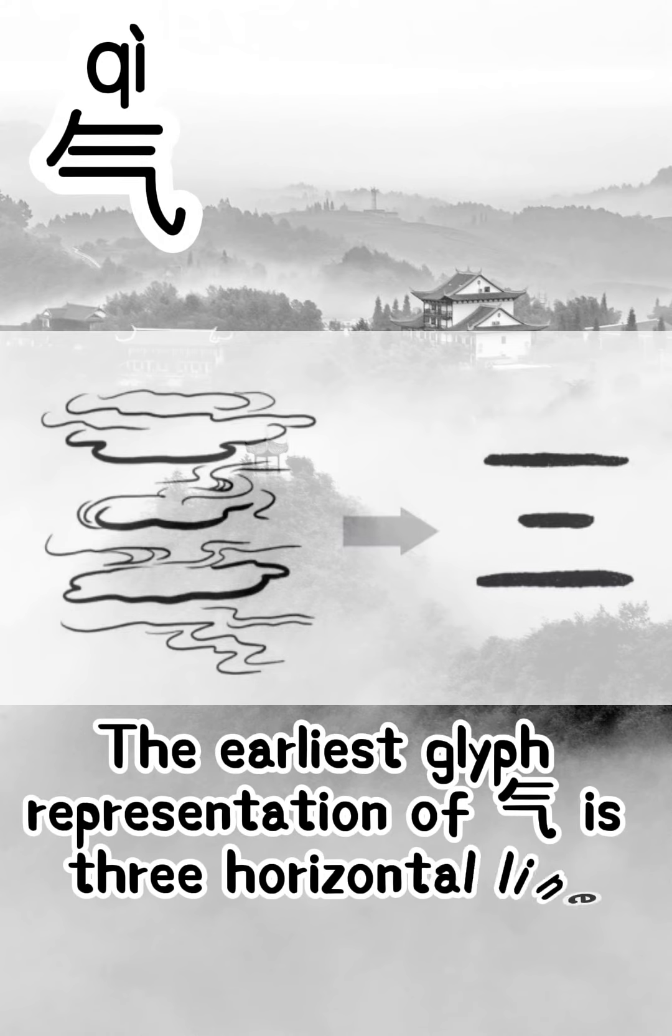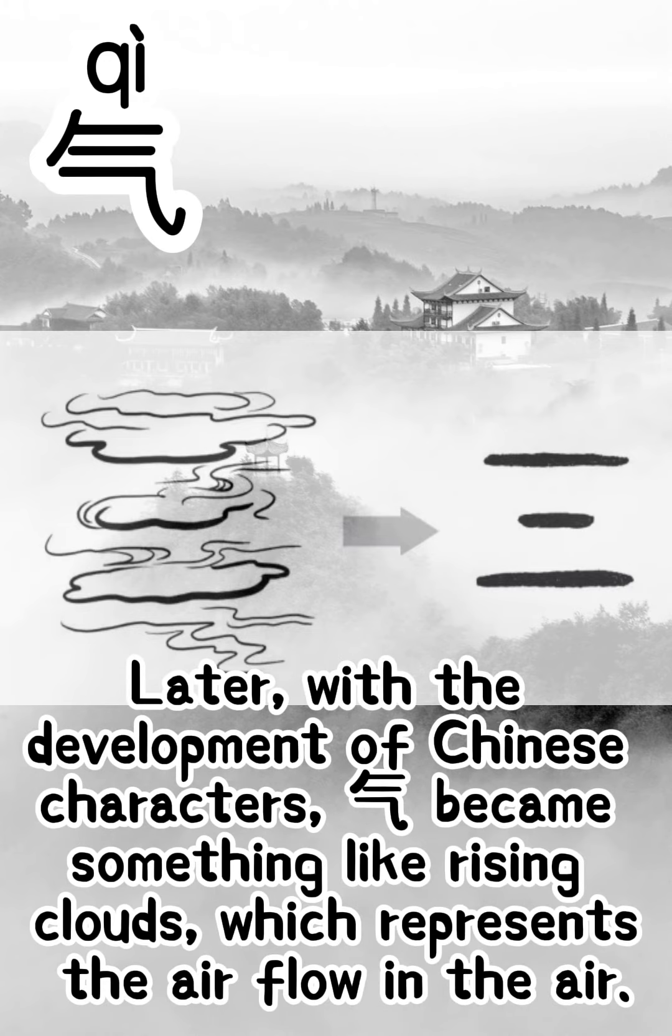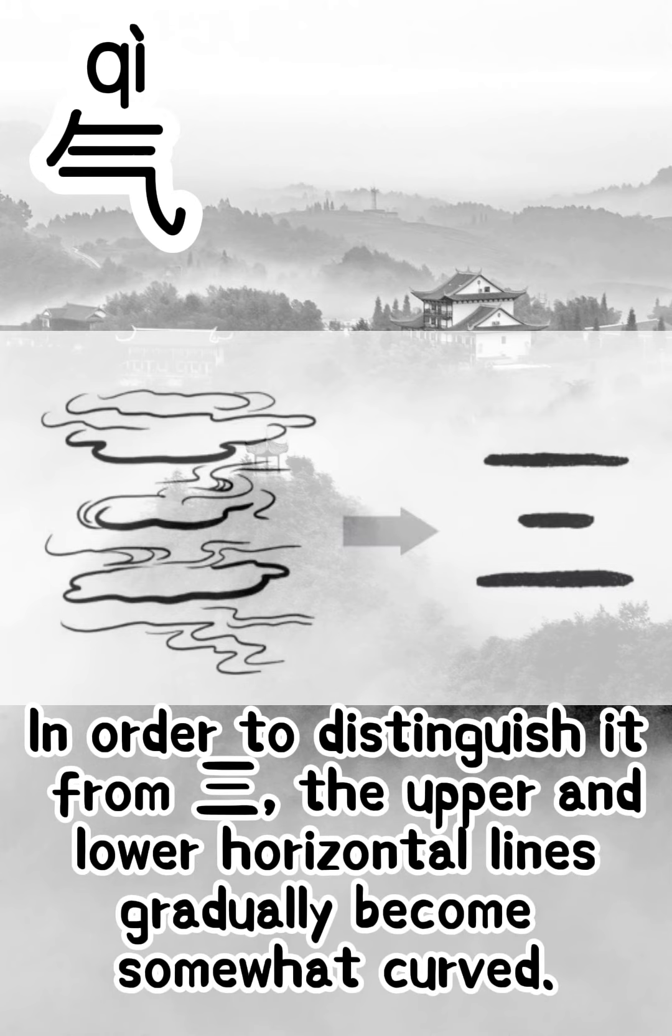The earliest glyph representation of Qi is three horizontal lines. Later, with the development of Chinese characters, Qi became something like rising clouds, which represents the airflow in the air. The upper and lower horizontal lines gradually become somewhat curved.